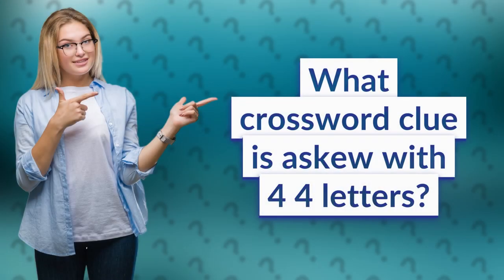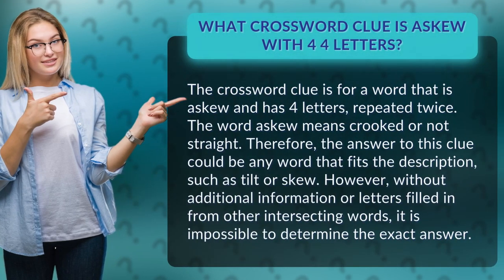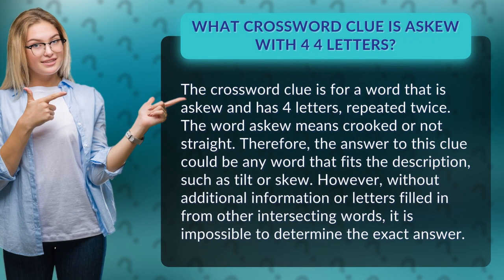What crossword clue is askew with four letters? The crossword clue is for a word that is askew and has four letters. The word askew means crooked or not straight. Therefore, the answer to this clue could be any word that fits the description, such as tilt or skew.